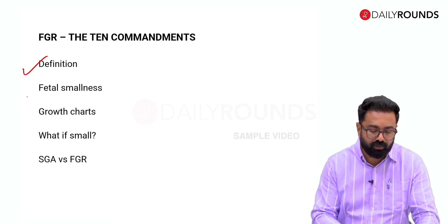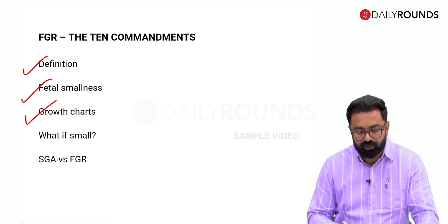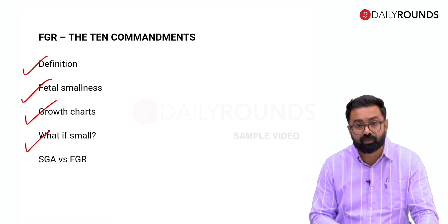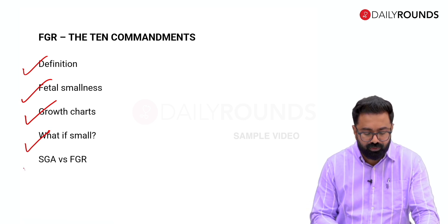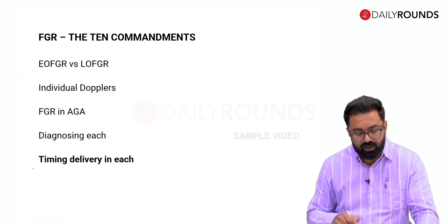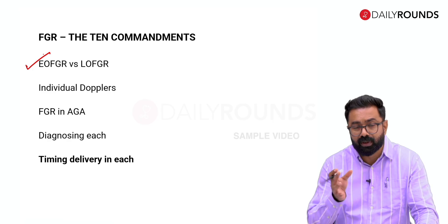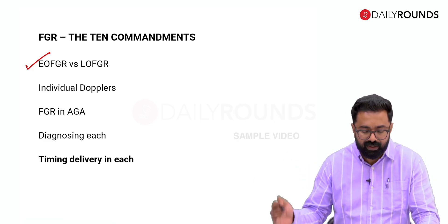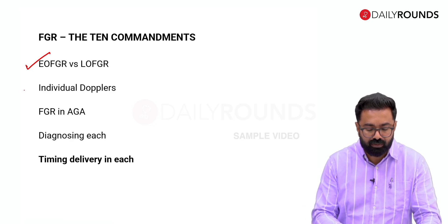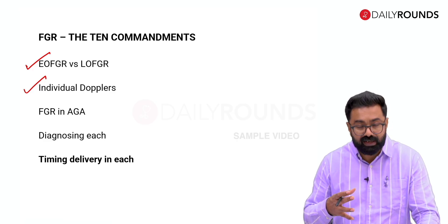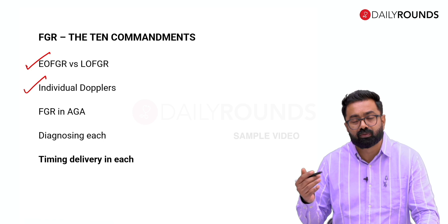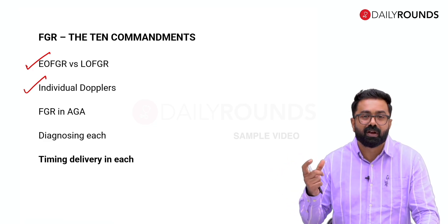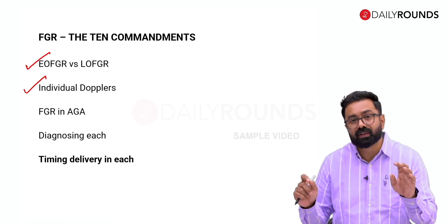To summarize: we covered the 10 commandments, the definition and concept of fetal smallness, growth charts and the controversy around which is best — recommending locally validated charts. We discussed the problems of the small baby, the difference between constitutional SGA versus true FGR, and the concepts of early and late onset FGR. The Barcelona group's contribution showed that in late onset FGR the umbilical artery Doppler could be normal, requiring reliance on other Doppler parameters. For FGR in AGA babies, CPR best correlates with fetal hypoxia.